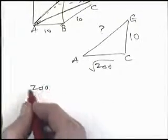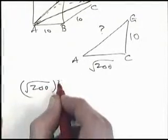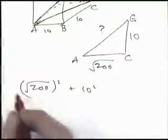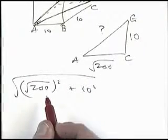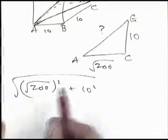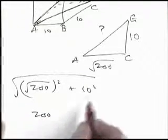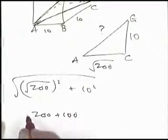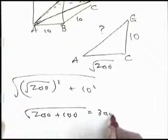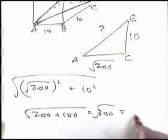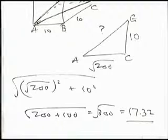So using Pythagoras, we square those two sides and I'm using the root 200 because it's more accurate than the decimal. Root 200 squared is 200, add on the 10 squared, that gives me 300, and I need to square root 300. Do that on a calculator, you get 17.32, which is the answer for that part.